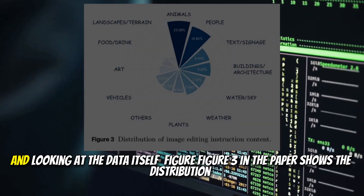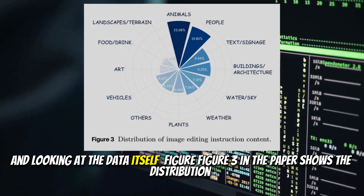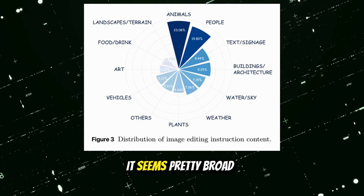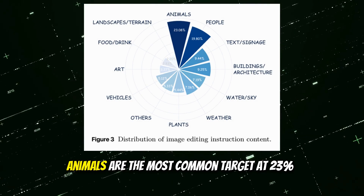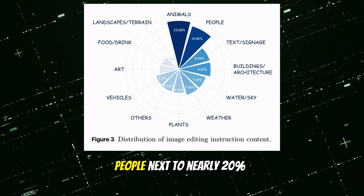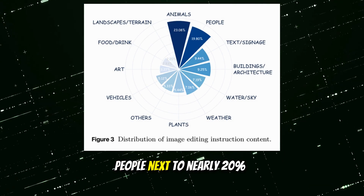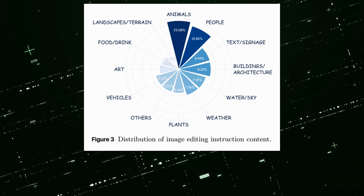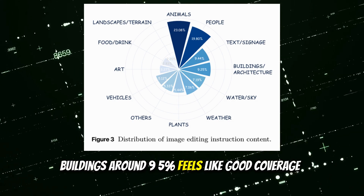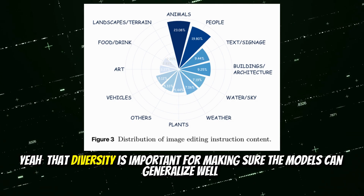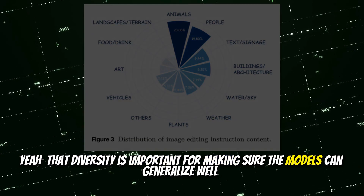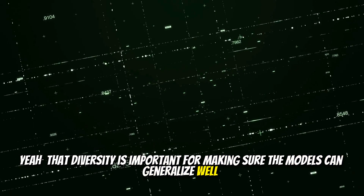Looking at the data distribution — Figure 3 in the paper shows it's pretty broad. Animals are the most common target at 23%, people next at nearly 20%, buildings around 9.5%. That diversity is important for making sure the models can generalize well.